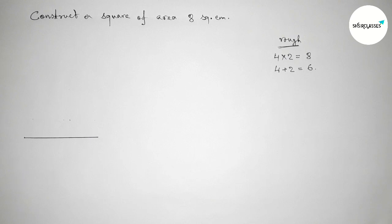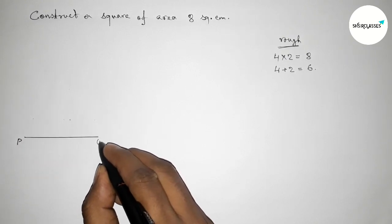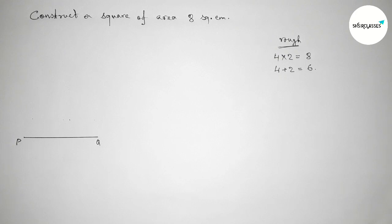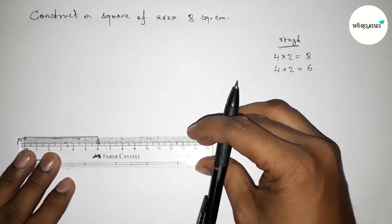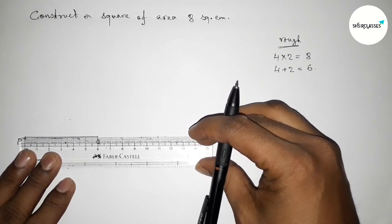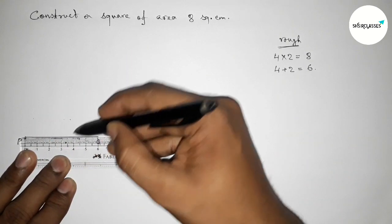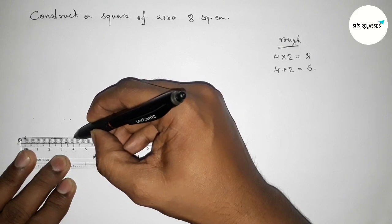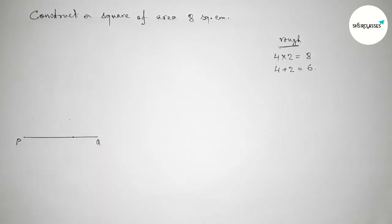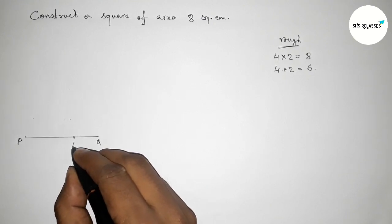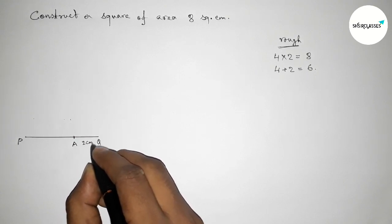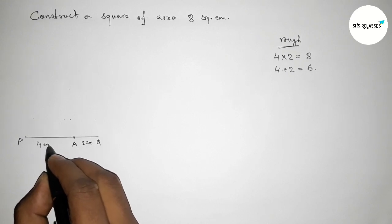Now taking point P and here Q. Next, we have to divide the line PQ in the ratio of 4 is to 2. So now dividing the line in the ratio 4:2, counting 4 centimeters first. This is 4 centimeter and remaining part must be 2 centimeter. So marking here and taking point A, so AQ equals to 2 centimeter and PA equals to 4 centimeter.